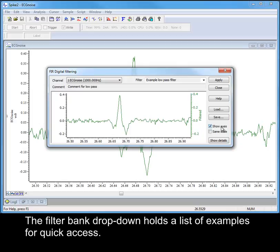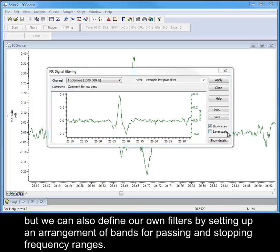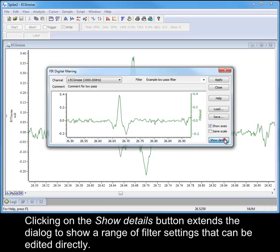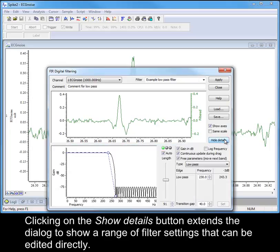The filter bank drop-down holds a list of examples for quick access, but we can also define our own filters by setting up an arrangement of bands for passing and stopping frequency ranges. Clicking on the Show Details button extends the dialogue to show a range of filter settings that can be edited directly.